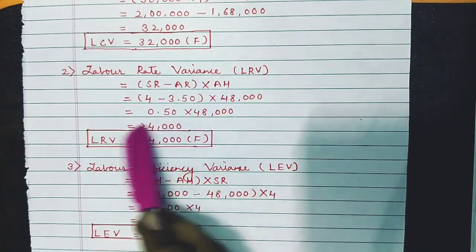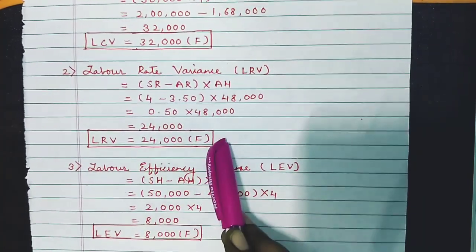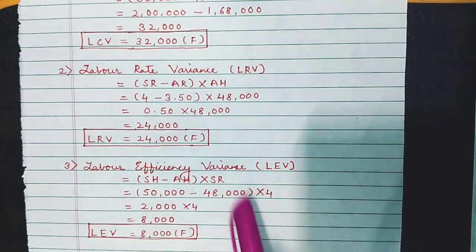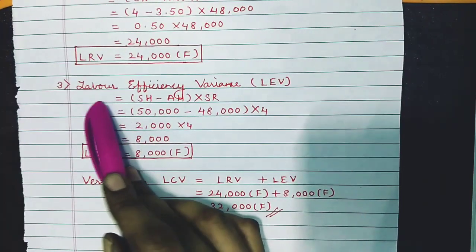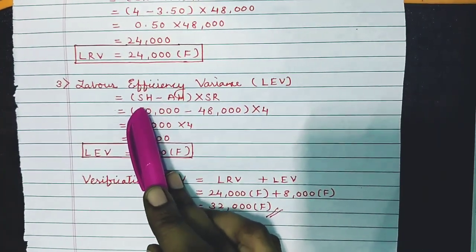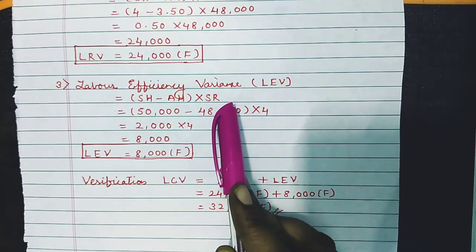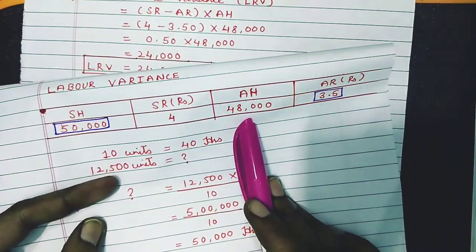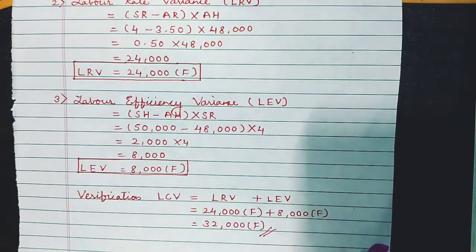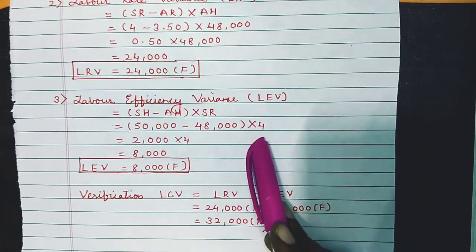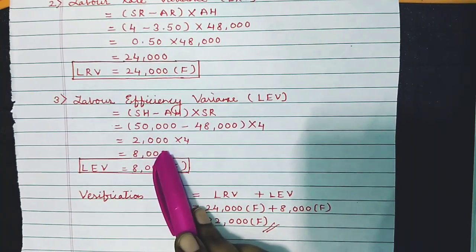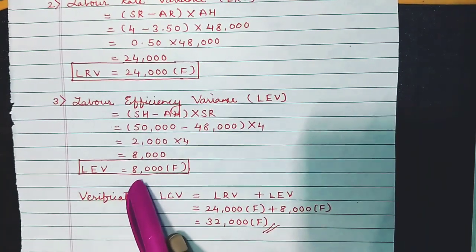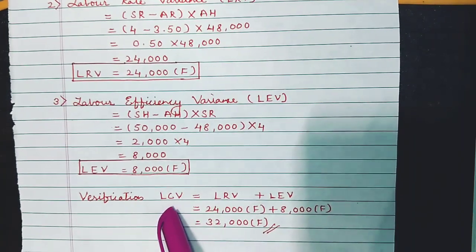You can skip the intermediate step and directly write 24,000 F. Labor Efficiency Variance (LEV) formula: (Standard Hours − Actual Hours) × Standard Rate. Standard hours is 50,000, actual hours is 48,000, standard rate is 4. So: (50,000 − 48,000) × 4 = 2,000 × 4 = 8,000. LEV = 8,000 Favorable.